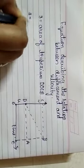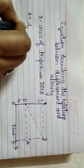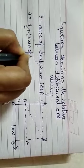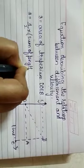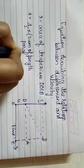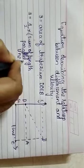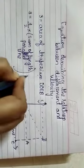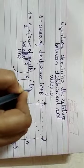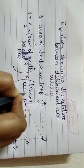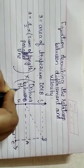S is equal to half into sum. Sum means what? Addition of length of parallel lines, into distance between the parallel lines.